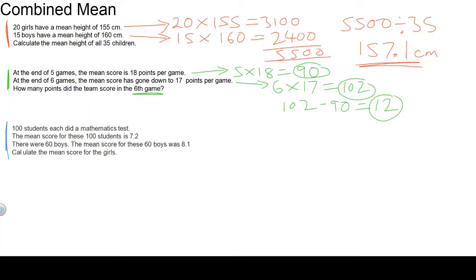If there are 60 boys, obviously there are going to be 40 girls to make up the 100 students. Let's look at the second sentence. 100 students altogether, multiplied by their mean, that's 720. The total score is 720 for all students, boys and girls.